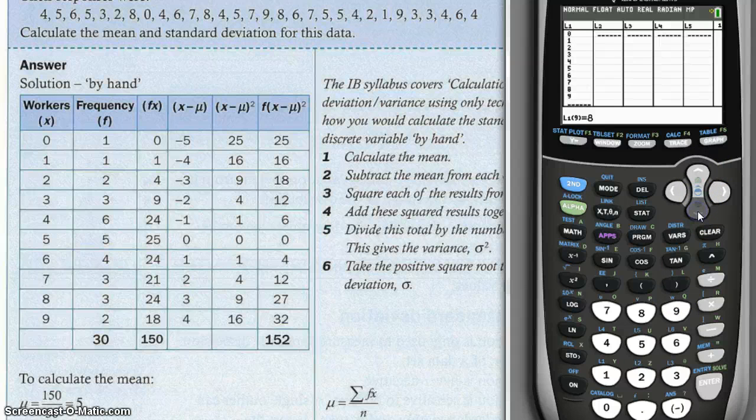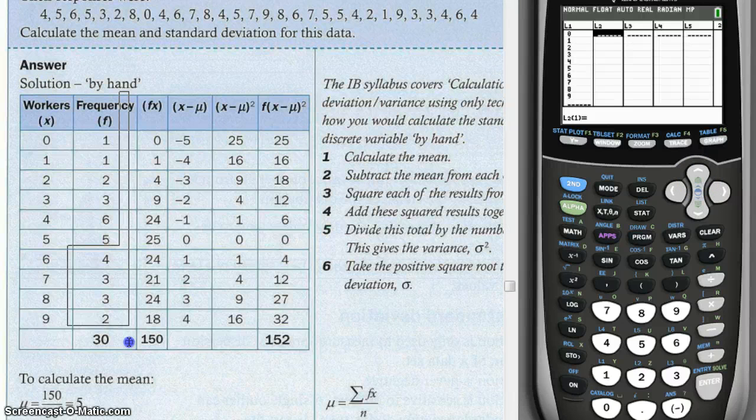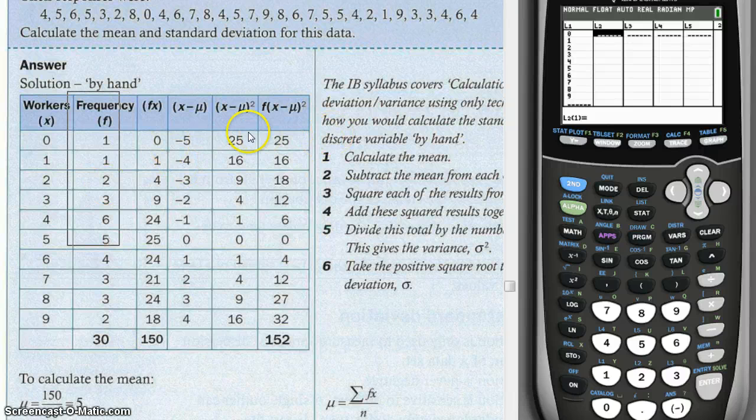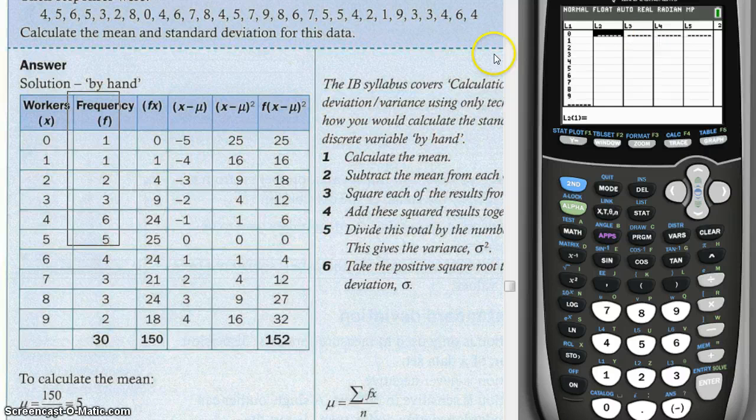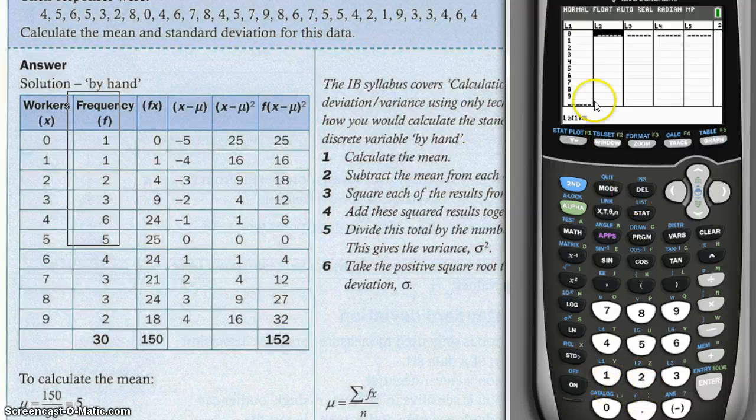For my L2, I'm going to use this portion, the second column of the table, which is the frequency. Put that down on the L2. So when L1 is 0, I have 1, and then I'll do the same thing for the whole entire column.